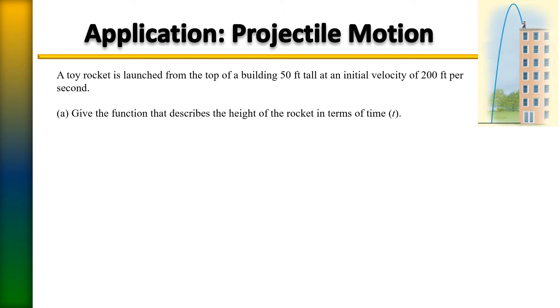A toy rocket is launched from the top of a building 50 feet tall at an initial velocity of 200 feet per second. Give the function that describes the height of the rocket in terms of time s.